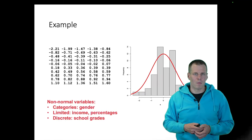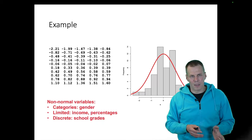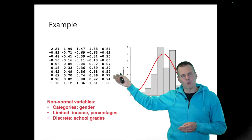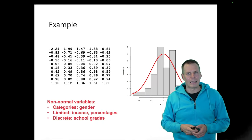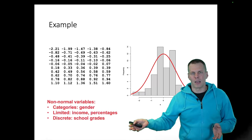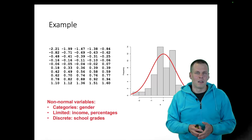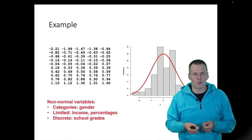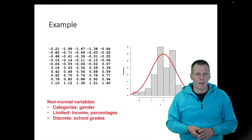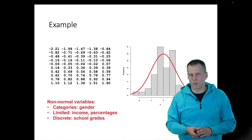All discrete variables also cannot be normal because the normal distribution is a continuous probability distribution. For example, school grades of one through nine — in Finland elementary school has nine grades — are discrete ordered variables. They cannot be normal. In practice, most of our data that we model cannot be normal, but the question is: are the data normal enough, and is a potential violation of the normality assumption severe enough to cause problems?